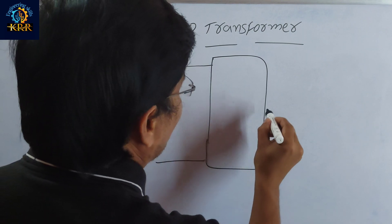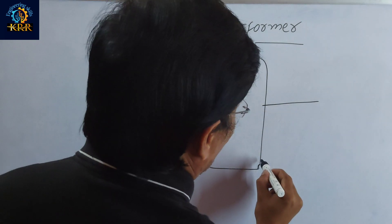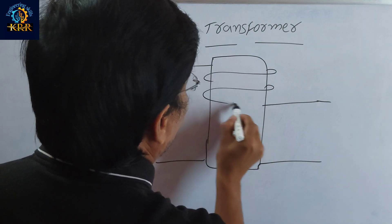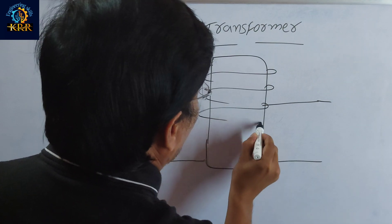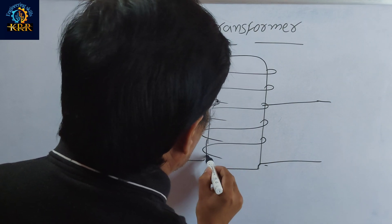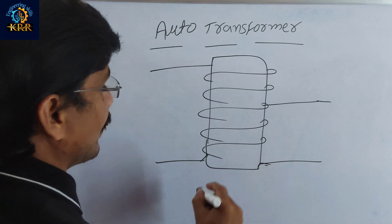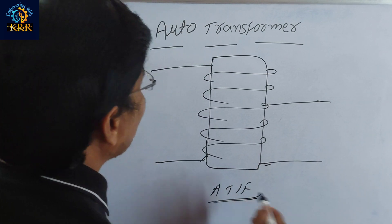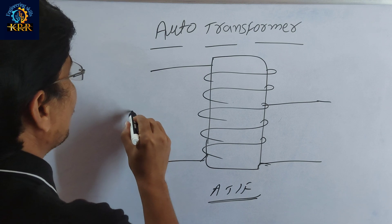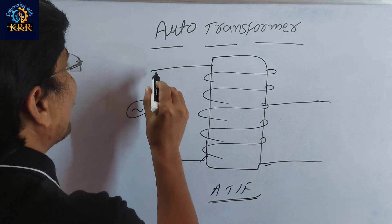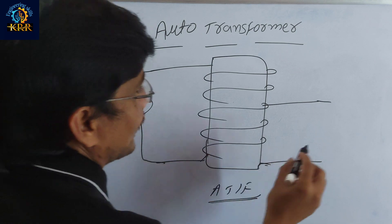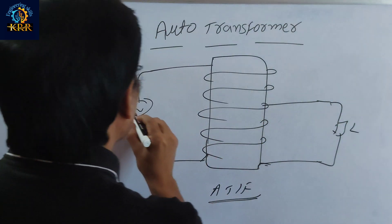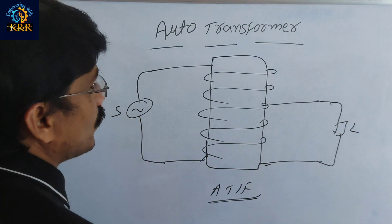This is the auto transformer. This is the supply side, meaning the source side. This is the load side.